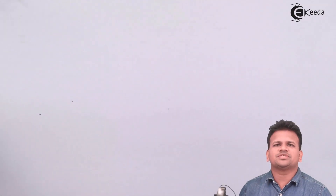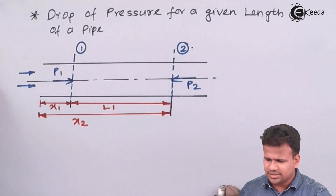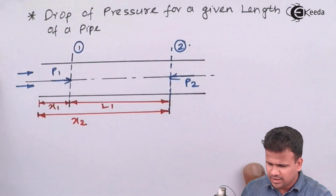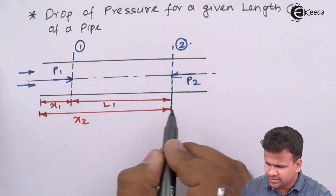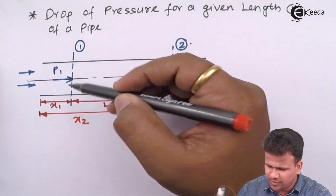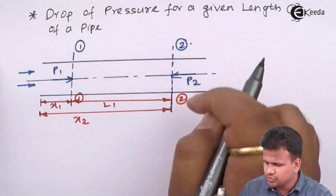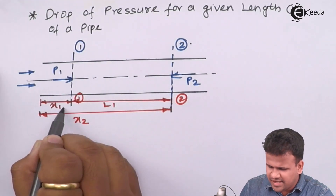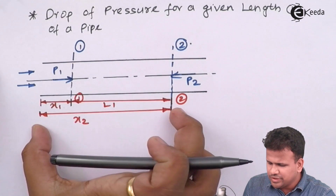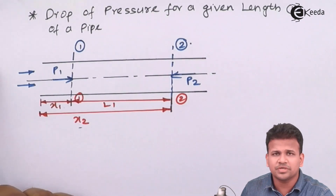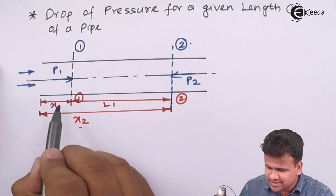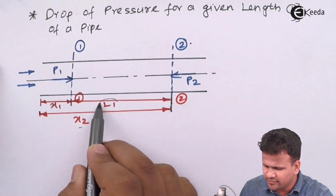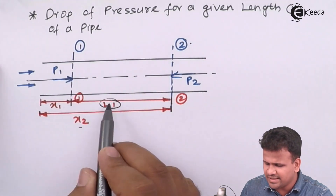To calculate the pressure drop over an entire length, let us consider a pipe having a length x2. There is section 1-1 over here and section 2-2 over here. Section 1-1 is at a distance of x1 from the origin and section 2-2 is at a distance of x2 from the origin. The distance between x1 and x2 — that is, between section 1 and section 2 — will be given as L.